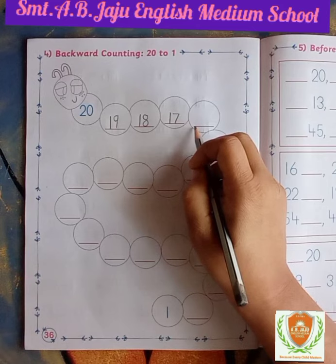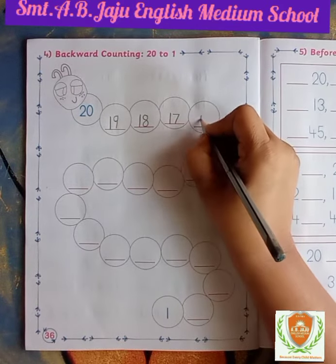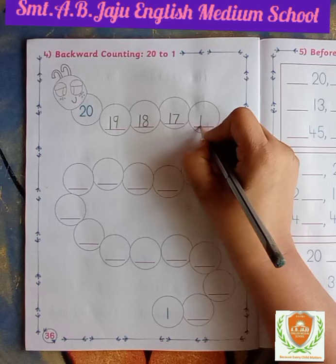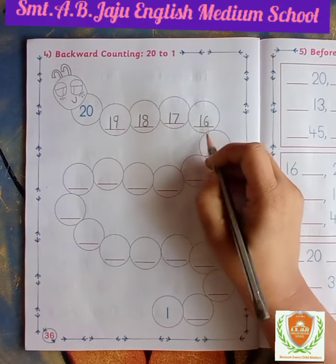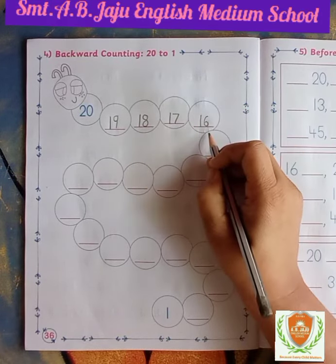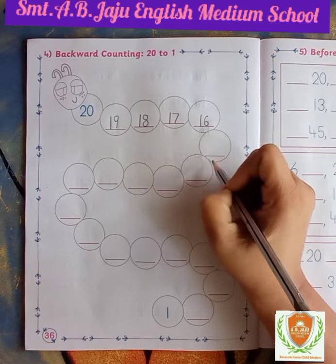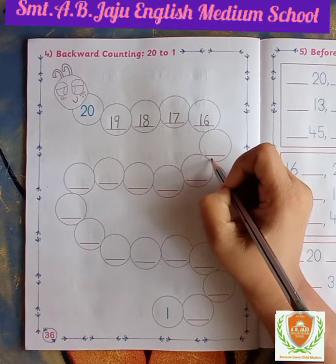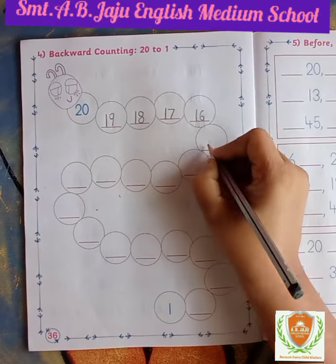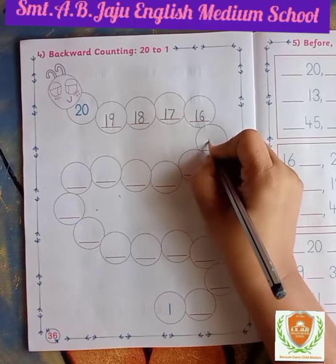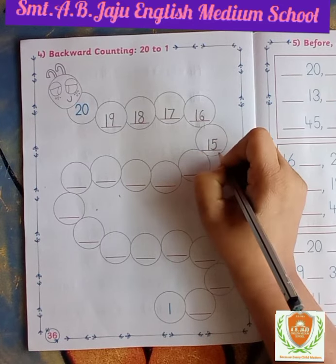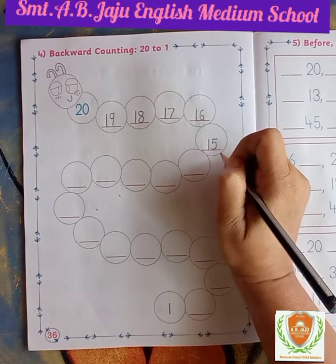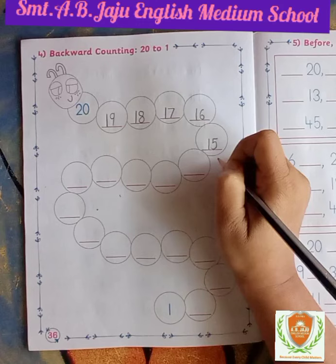After 17, which number will become here? 16. Write down first 1, then write down 6 — this is 16. After 16, which number will become, student? 15 — in backward. You have to write down like this.